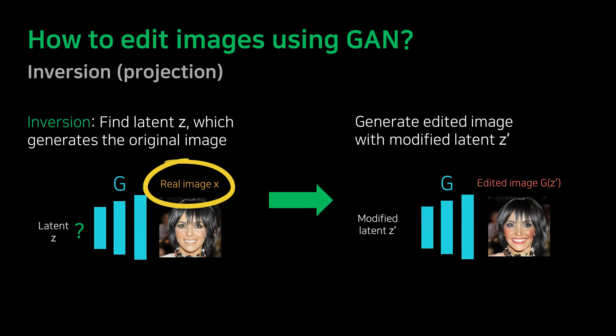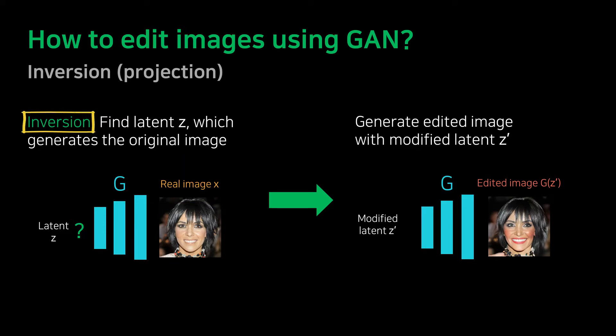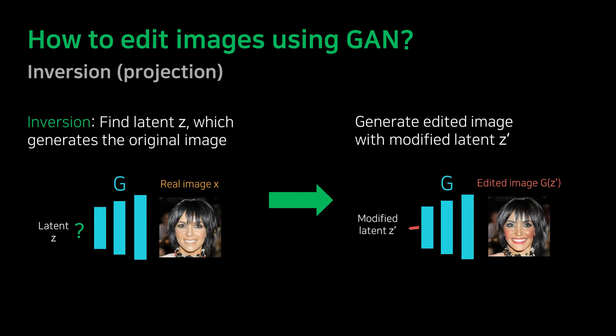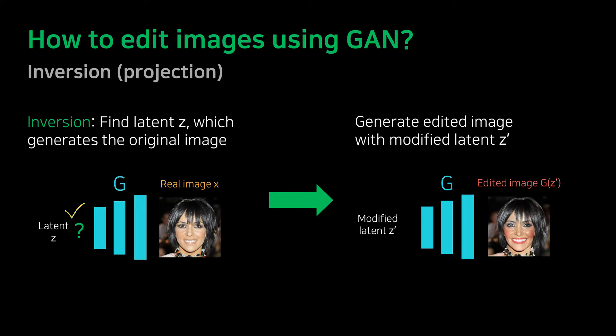In order to edit a real image X, we need to find latent Z that can create X, and this process is called inversion or projection. Once we perform inversion to find latent Z, we modify the Z value according to the editing task to generate latent Z prime. Then we insert this Z prime into the generator again to generate the finally edited image. The point is that if we cannot find proper latency, the result is not going to be good no matter how the editing is done, so editing research that uses GAN spent a lot of effort in improving the inversion performance.